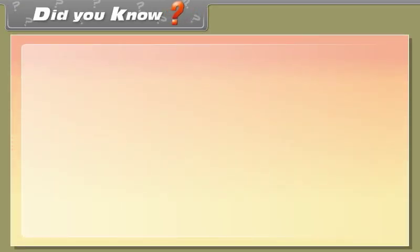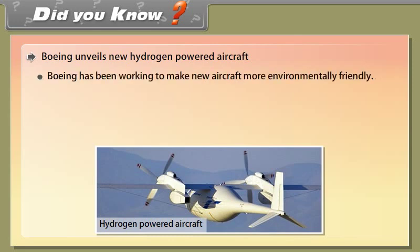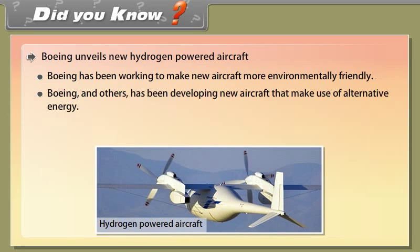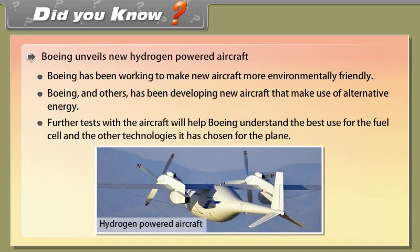Did you know? Boeing unveils new hydrogen-powered aircraft. Boeing has been working to make new aircraft more environmentally friendly. Boeing and others have been developing new aircraft that make use of alternative energy. Further tests with the aircraft will help Boeing understand the best use for the fuel cell and the other technologies it has chosen for the plane.